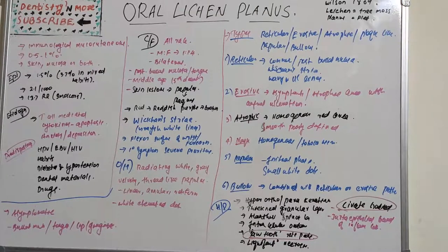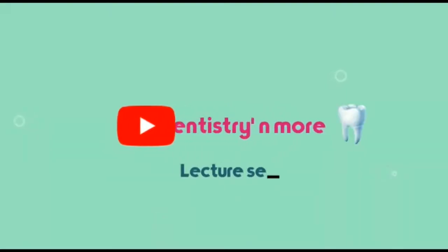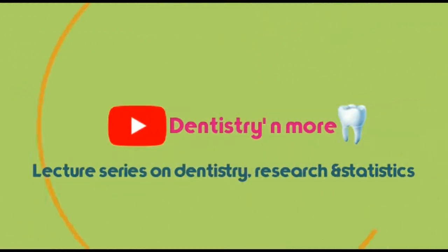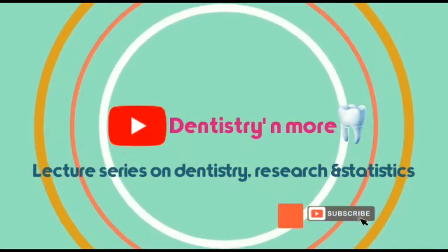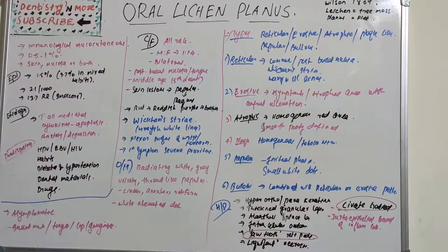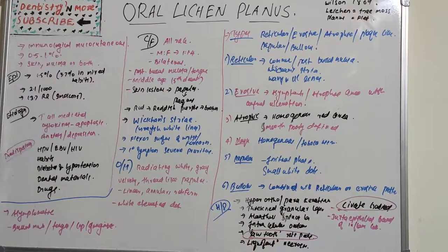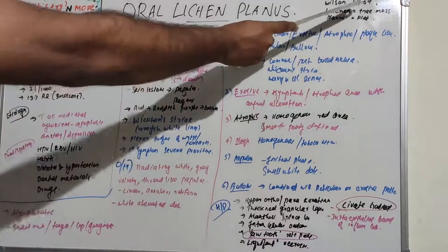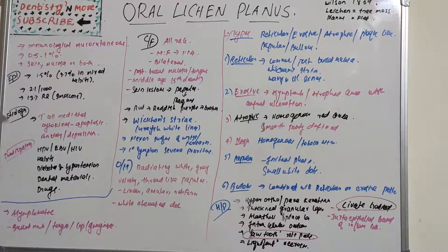The word 'lichen planus' is derived from the Greek word 'lichen,' meaning tremors, and the Latin word 'planus,' meaning flat. So it looks like tremors and it is a flat lesion — that is why it got this name. Lichen planus is an immunologically mediated mucocutaneous disease.